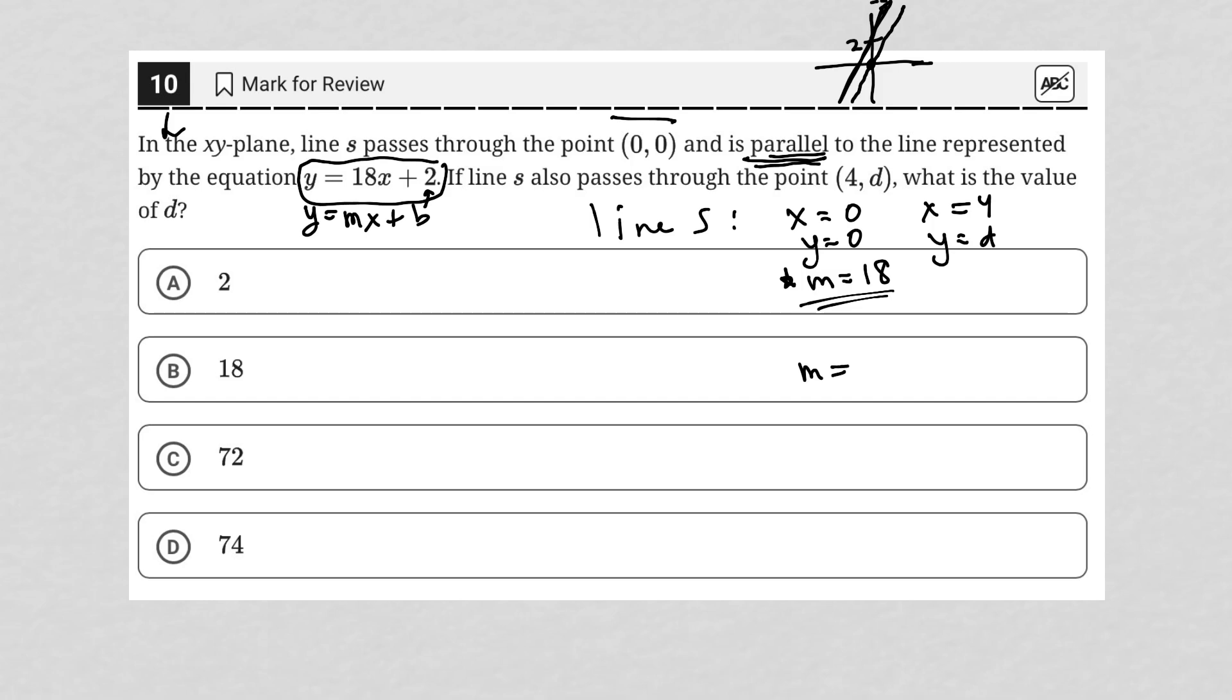We can find slope by finding the difference of our y values, y₂ - y₁, over the difference in our x values, x₂ - x₁.